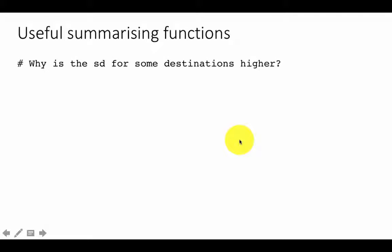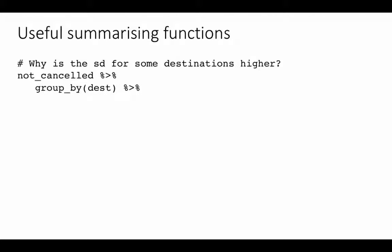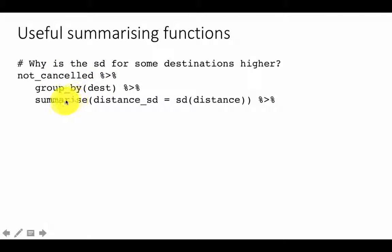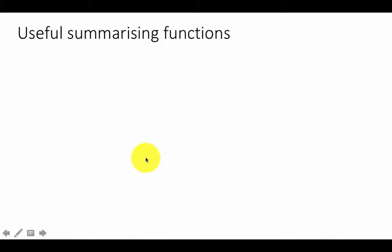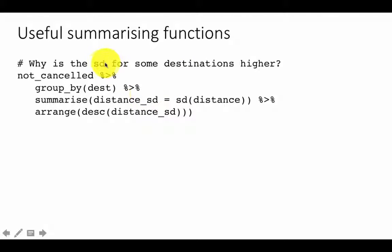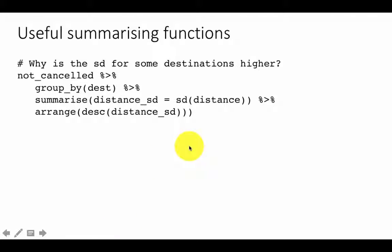We can also look at standard deviations while summarizing. For example, take the not-cancelled flights, group by destination, and find the standard deviation of distance. You'll find that for some destinations the standard deviation is higher than for others. This is probably because for shorter distances the route taken is mostly the same, whereas for longer distances the routing may be fairly different — hence higher standard deviation.